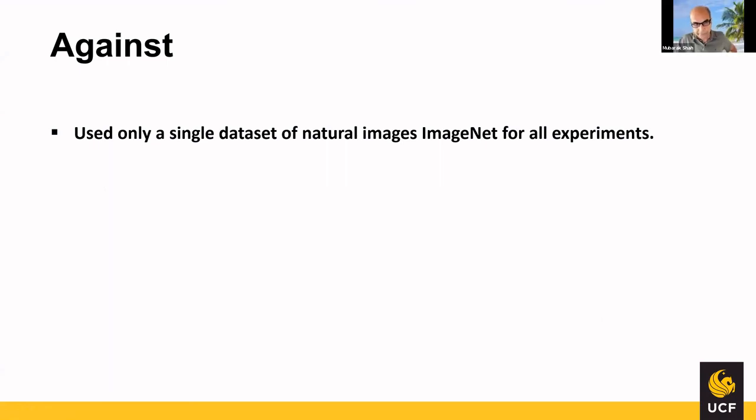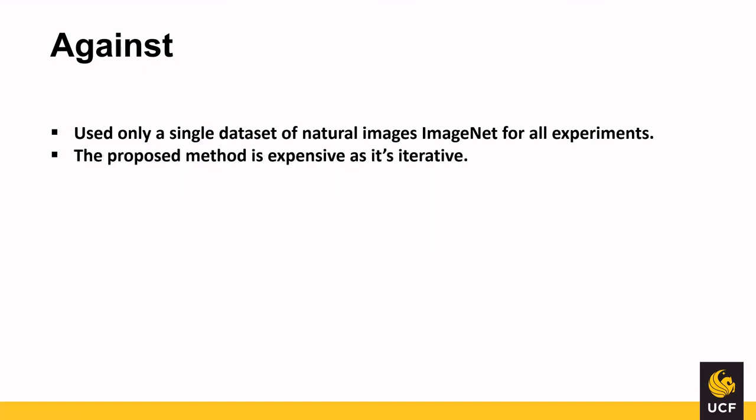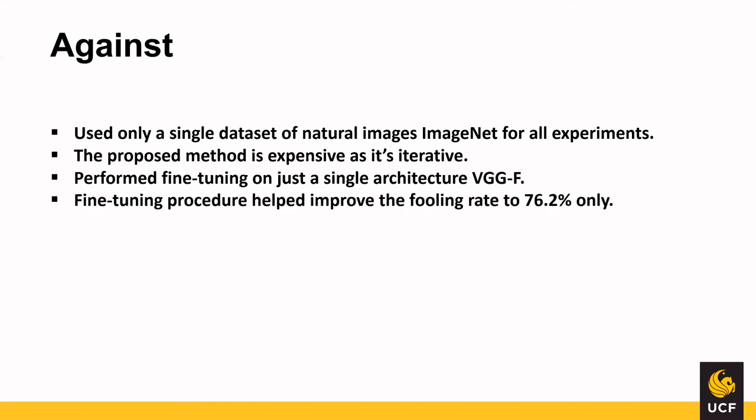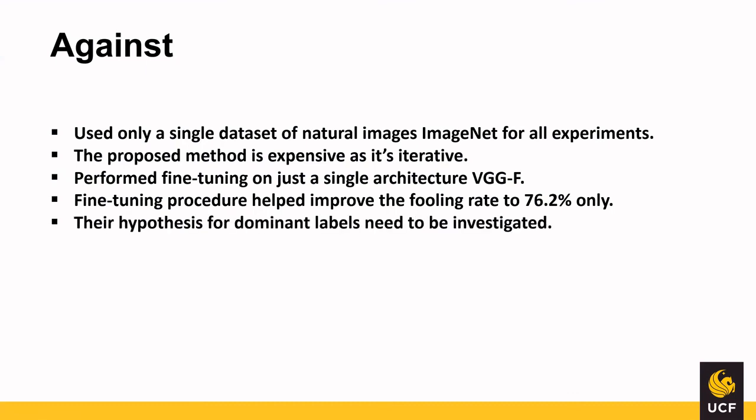Against remarks: They used only a single dataset of natural images — ImageNet — for all their experiments, so results may not generalize. The proposed method is expensive because it is iterative. They performed fine-tuning on just one architecture, VGGF, out of the six discussed. The fine-tuning procedure helped improve the fooling rate but is not guaranteed to fully immunize the network. Finally, their hypothesis regarding dominant labels needs further investigation — it was presented once with no follow-up or proof.